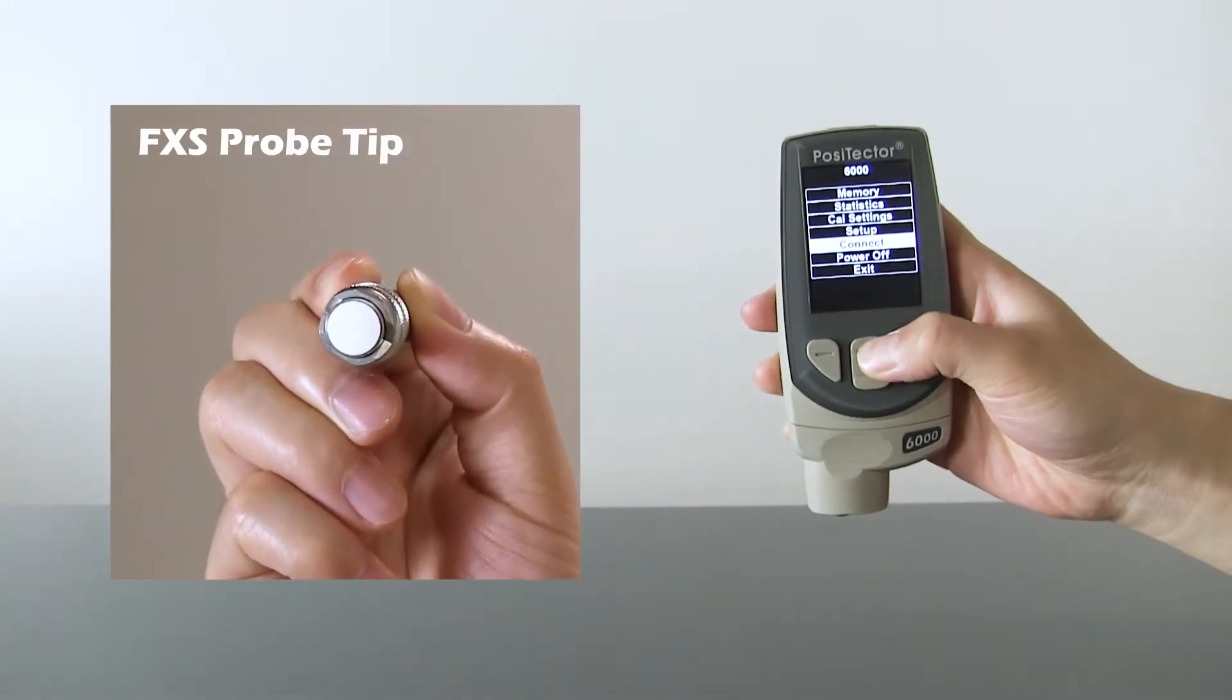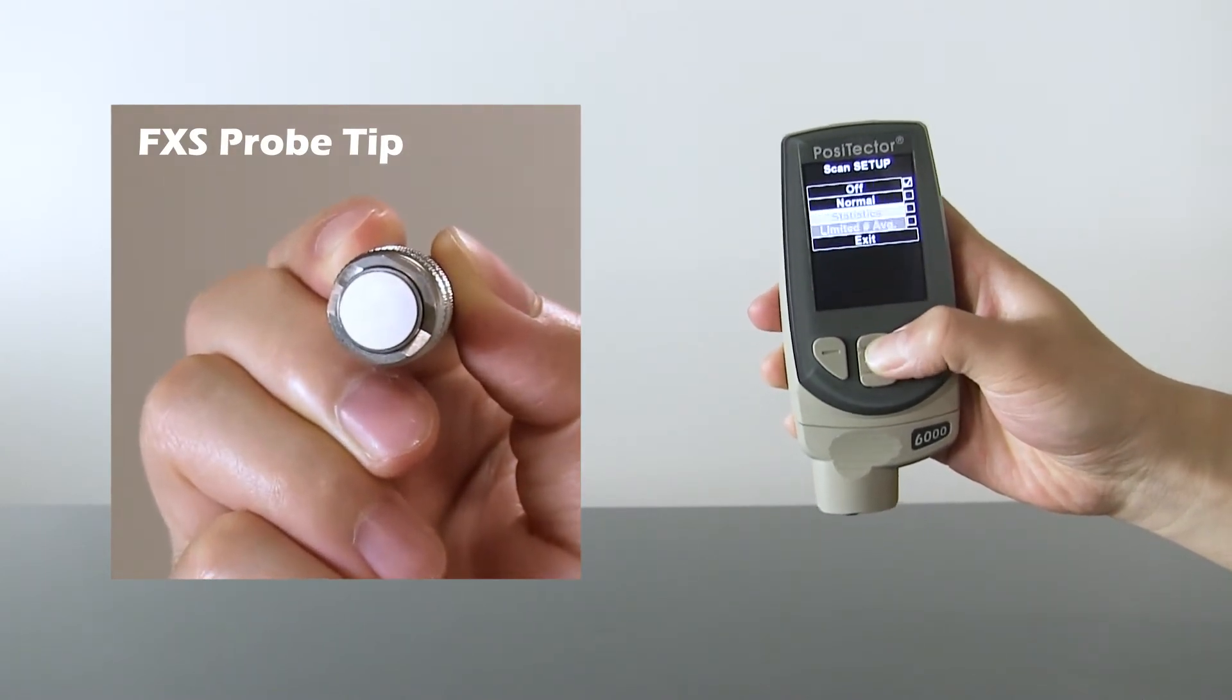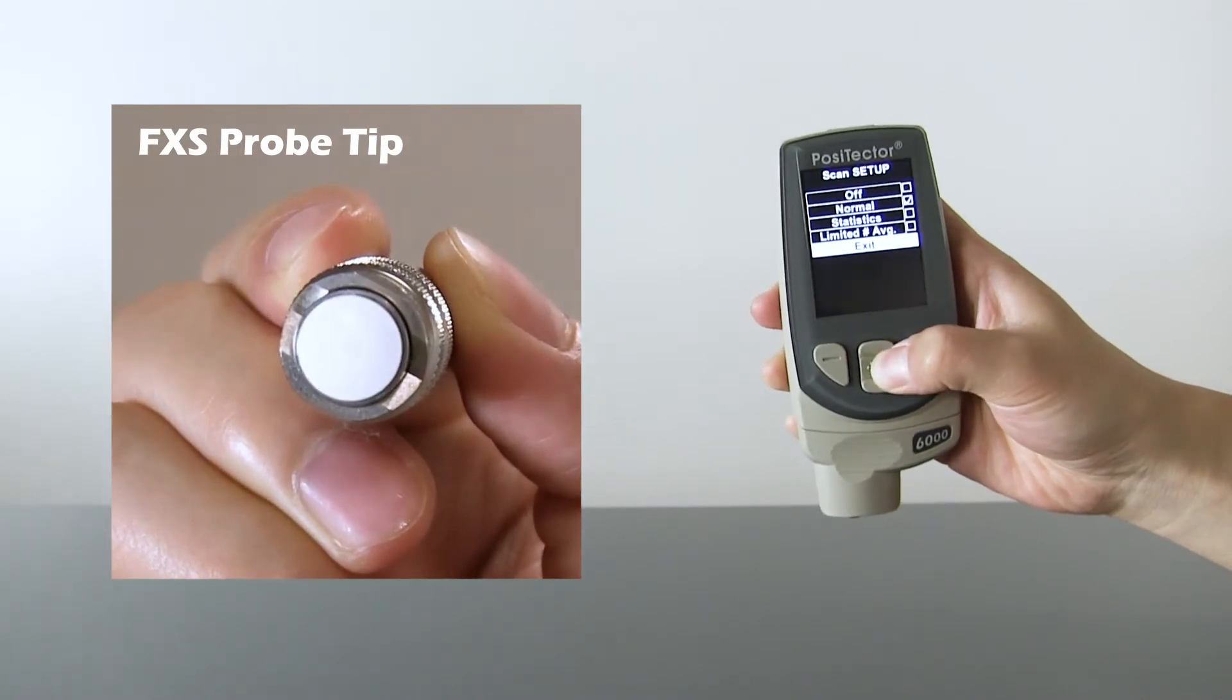For rough coatings, the Positector 6000 F-XS and F-H-XS probes feature zirconia-toughened alumina wear faces.